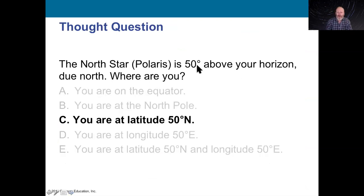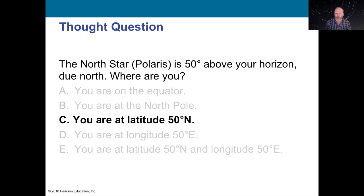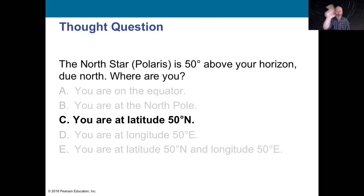Here's a neat thing: the altitude of Polaris equals your latitude. If you're at 50 degrees north latitude, Polaris is 50 degrees — five fists — above your horizon. At the North Pole, you're at 90 degrees latitude, and Polaris is right above you at 90 degrees. At the equator, you're at zero degrees latitude, and Polaris is right on the horizon. Everything still goes around Polaris, just at a different apparent angle depending on where you are.